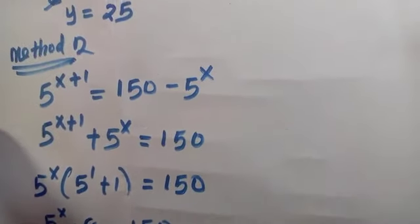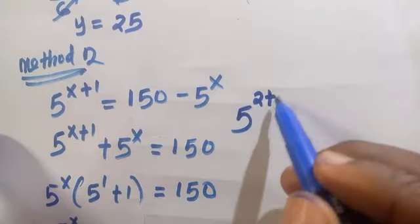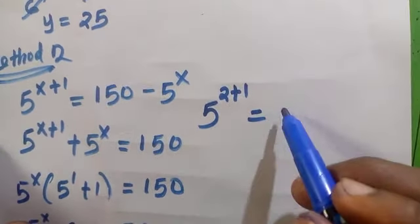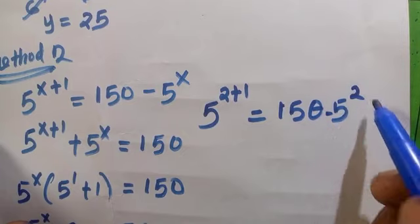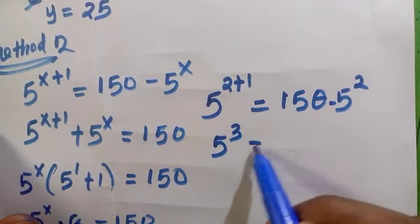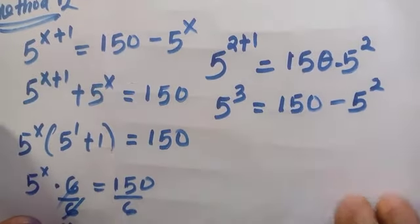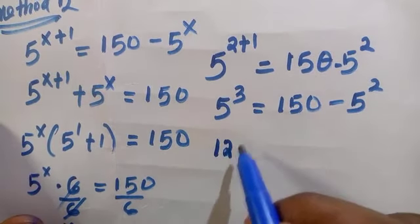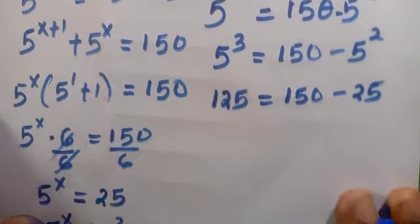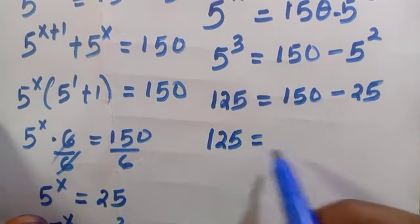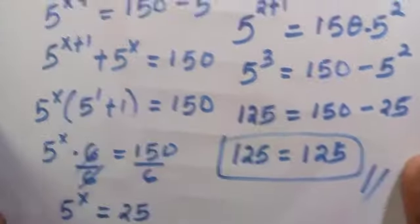And by checking, to verify if the left hand side equals the right hand side, you substitute the value of x which is 2. Then we have this as 5^(2+1) equals 150 minus 5^2. So 5^3 is 5 multiplied by 5 multiplied by 5, that is 125, equals 150 minus 25. And we'll get the result which is 125, which shows that x equals 2 satisfies this problem.